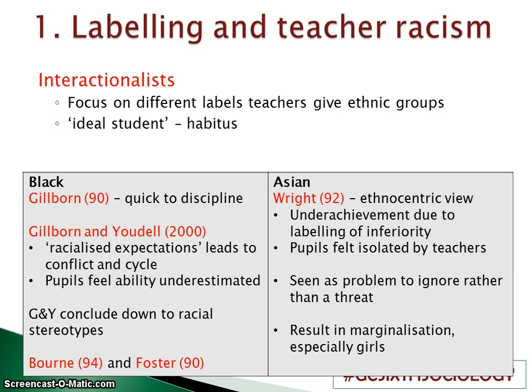Gilborne and Udall also found that pupils felt their ability was very much underestimated. It didn't matter how clever or intelligent they were — because of the colour of their skin or their ethnicity, it made no difference. Teachers still tracked them in a certain way. The conclusion Gilborne and Udall draw from this is that educational achievement is down to racial stereotypes; it's about the teachers' opinion of that child, nothing to do with outside of school.